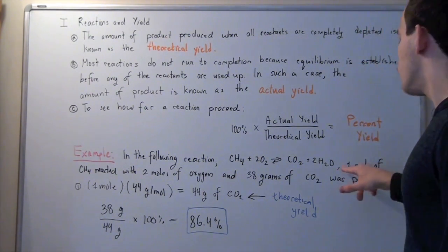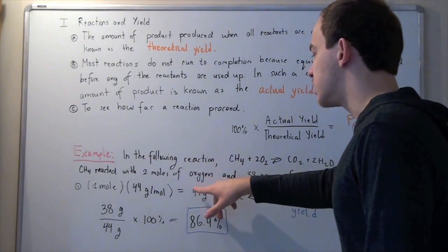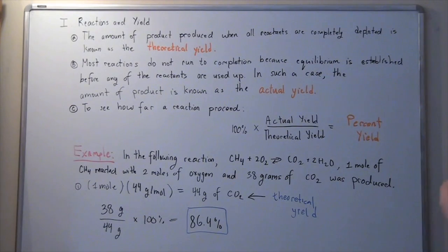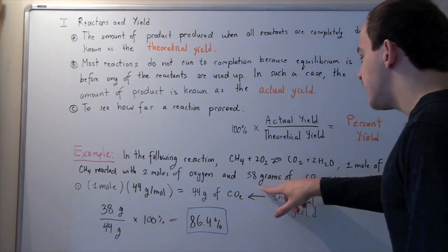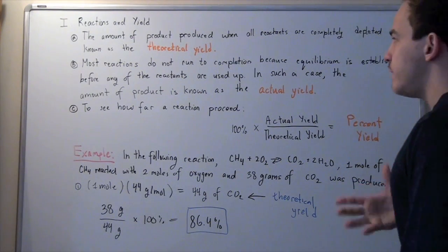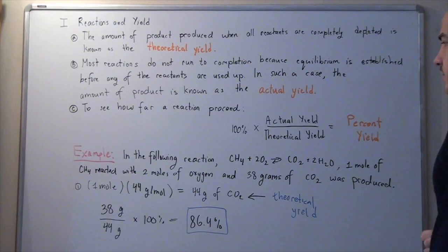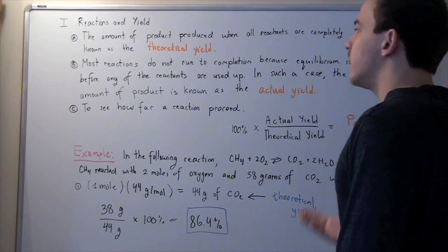Let's suppose we react one mole of methane with two moles of oxygen, and we find that our actual yield in grams was 38 grams of carbon dioxide. If we find our theoretical yield, we could then find our percent yield. How would we go about finding our theoretical yield?